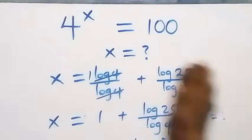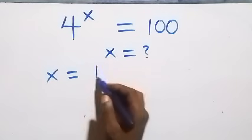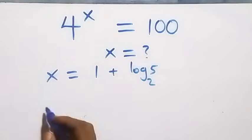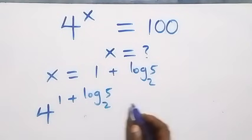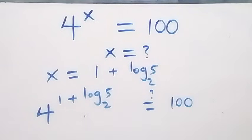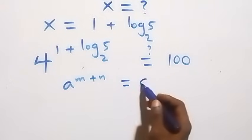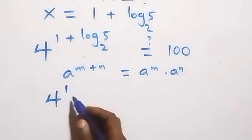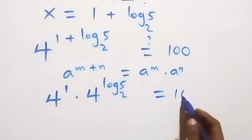Now let's verify this satisfies the original equation. We substitute x equals 1 plus log 5 to base 2 back in, giving 4 raised to the power (1 + log₂5) equals 100. Using the exponent rule a^(m+n) = a^m × a^n, this becomes 4 raised to power 1 times 4 raised to power log₂5, which equals 4 times 4^(log₂5), and equals 100.